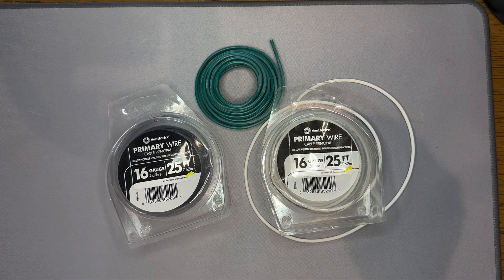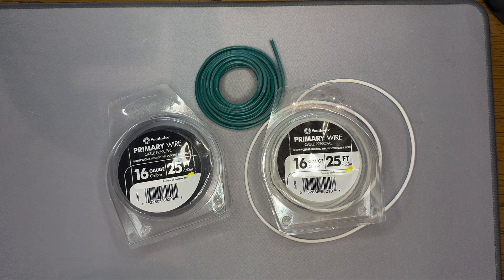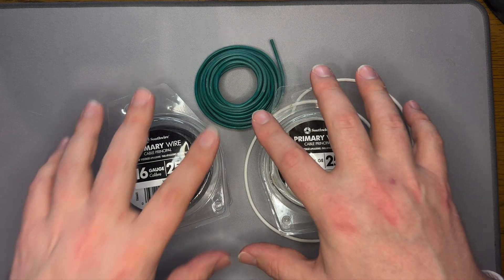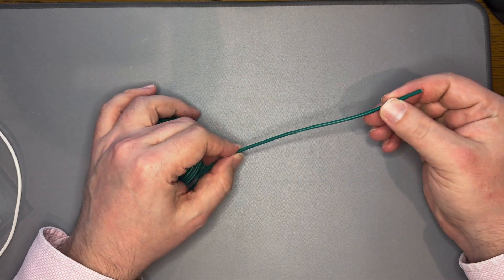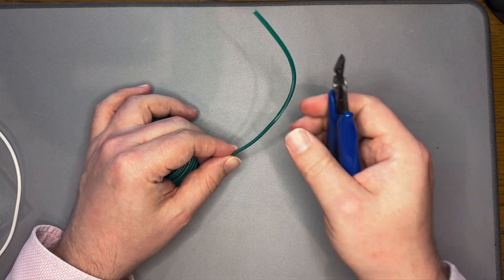Before we put everything together, I like to cut and prep all the wire that we will need for assembly. We'll start with the ground wire, which is typically green. You will need one piece, typically about 6 to 7 inches long.